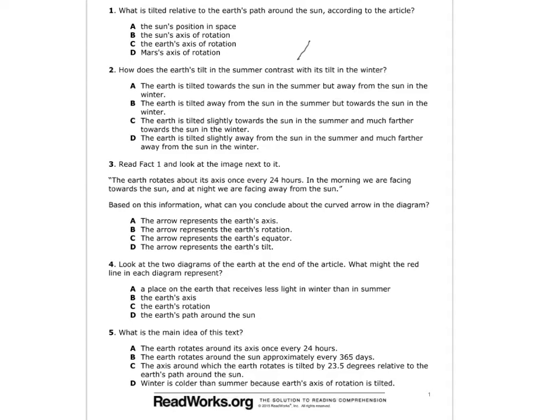Question one: what is tilted relative to the earth's path around the sun, according to the article? The answer choices include the sun's position in space and the sun's axis of rotation. We can eliminate those automatically because we know that the sun doesn't have an axis, and Mars was not mentioned in the article. The correct answer is that it is the earth's axis that is tilted relative to the earth's path around the sun.